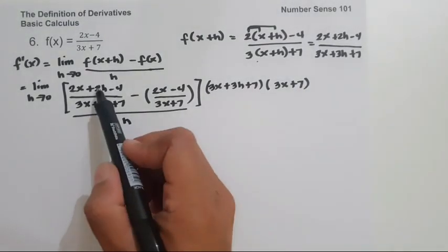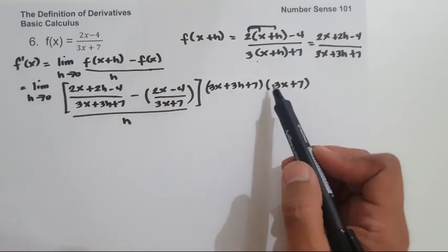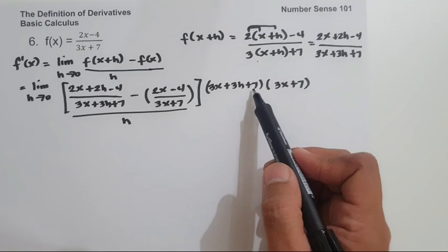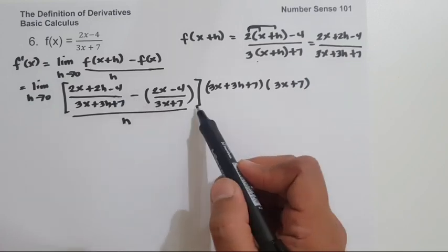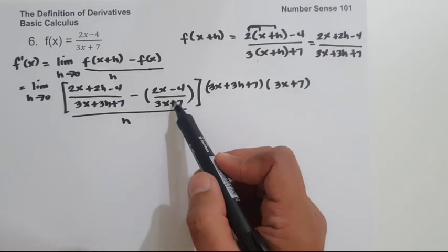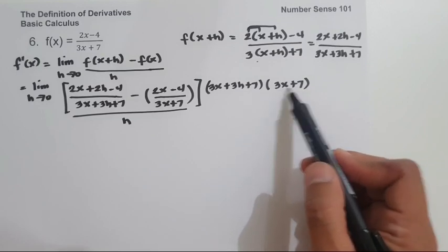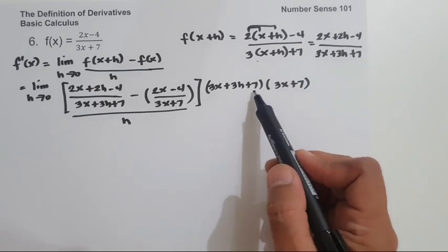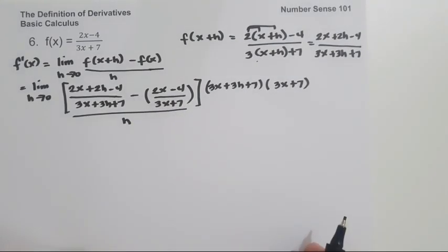When we multiply the first fraction by (3x plus 3h plus 7) and (3x plus 7), we cancel (3x plus 3h plus 7) and are left multiplying (3x plus 7) by (2x plus 2h minus 4). Similarly, on the second term, we cancel (3x plus 7) and multiply (3x plus 3h plus 7) by (2x minus 4), then distribute the negative sign.